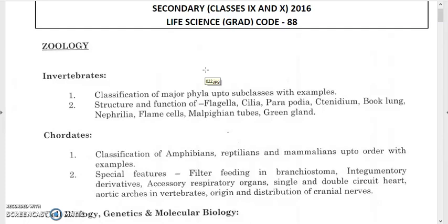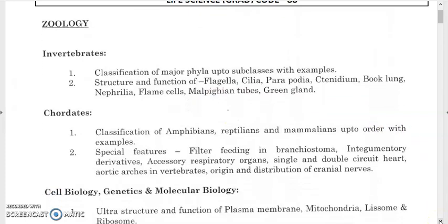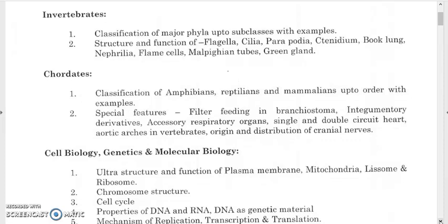You need to study how flagella and cilia work, the different structures of parapodia and tinidium, book lungs, nephridia, flame cells, and Malpighian tubules. These are the excretory organs of different animals. In arthropods, Malpighian tubules and green glands are found. The second topic is chordates: classification of amphibians, reptilians, and mammals up to order with examples.